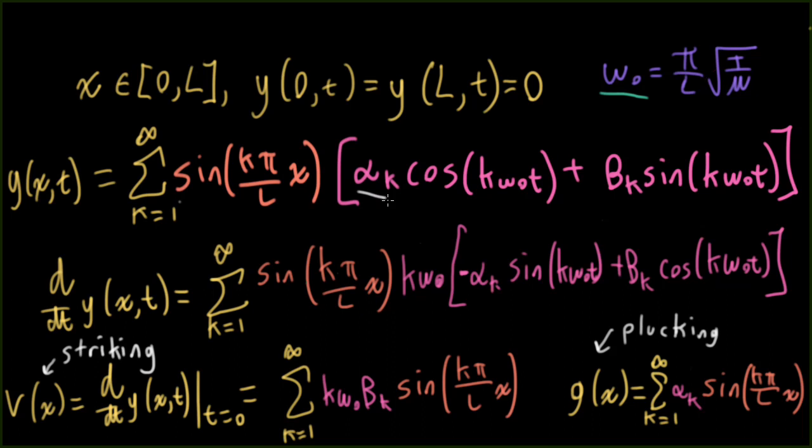So the weights on these sinusoids, this alpha k and the beta k, those are determined by our initial conditions. The initial condition on the position determines alpha k. And the initial condition on the velocity determines the beta k. So the question is, can we find alpha k and beta k from G and V if we're given G and V? Well, it turns out we can.